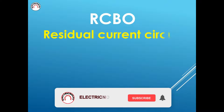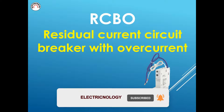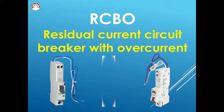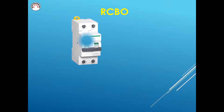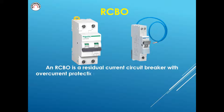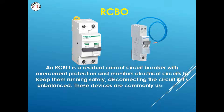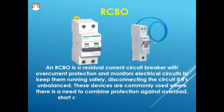RCBO stands for Residual Current Circuit Breaker with Overcurrent Protection. It monitors electrical circuits to keep them running safely, disconnecting the circuit if it's unbalanced. These devices are commonly used where there is a need to combine protection against overload, short circuit, and earth leakage currents.